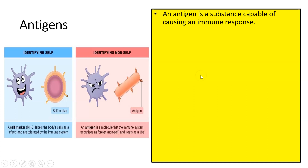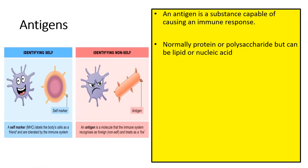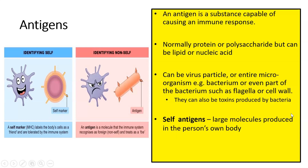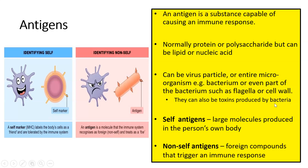An antigen is a substance capable of causing an immune response — typically the non-self antigens do that. Normally these antigens are either protein or carbohydrate based, though sometimes they can be lipid or nucleic acid based. Antigens can be viral particles or part of a pathogen such as the flagella of a bacterium or its cell wall. They can also be toxins secreted or produced by bacteria — they don't necessarily have to be the organism itself. Self-antigens allow the body to recognize its own cells, while non-self antigens trigger the immune response.